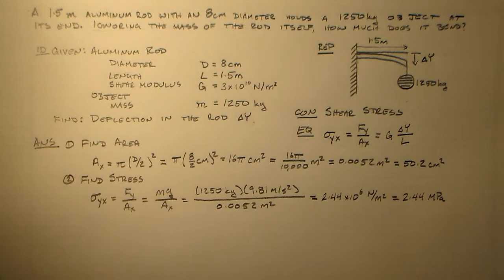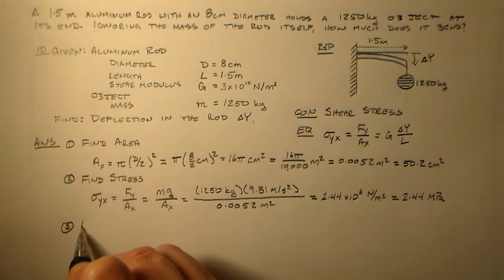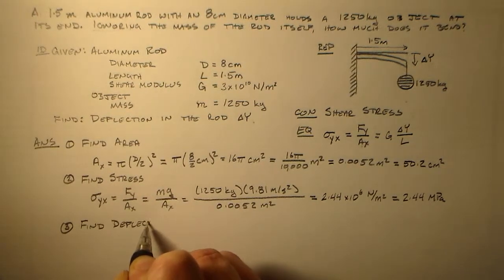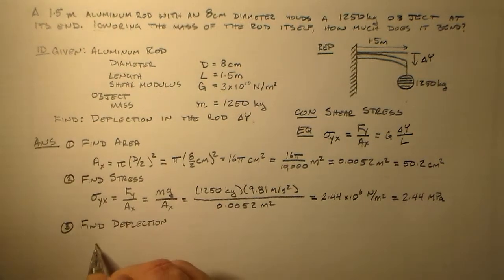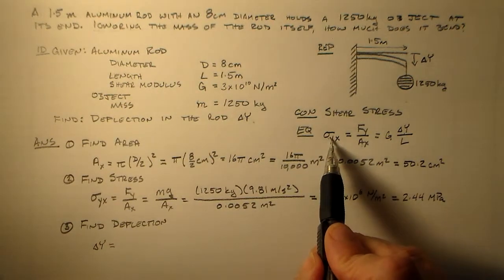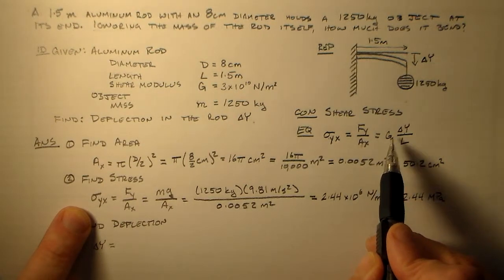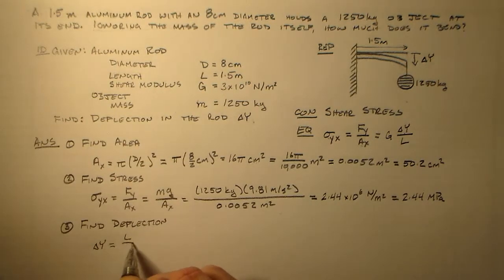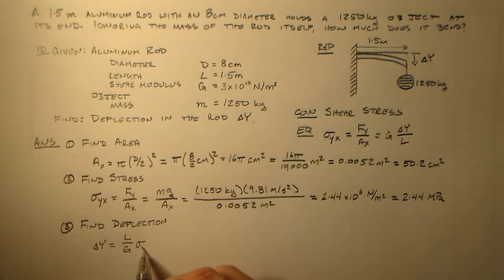Alright. So we're just going to solve for delta y here. Delta y is equal to, well, it's proportional to σ_yx. We found that right here. And it's inversely proportional to g, and it's proportional to l. So we have l over g. That's l over g times σ_yx.